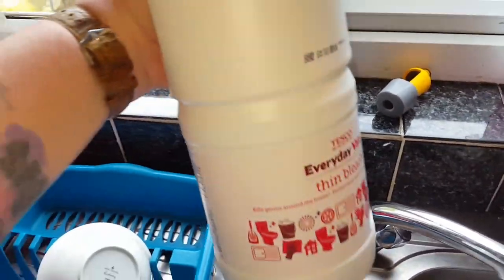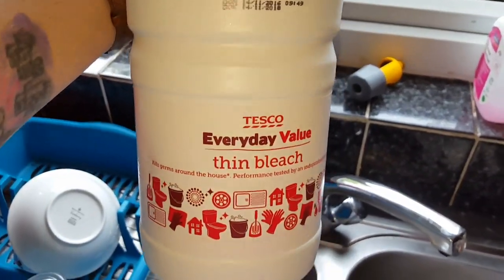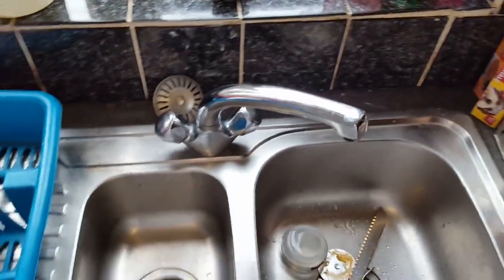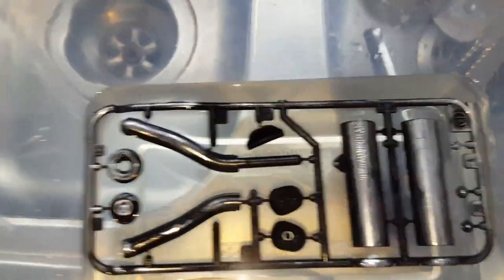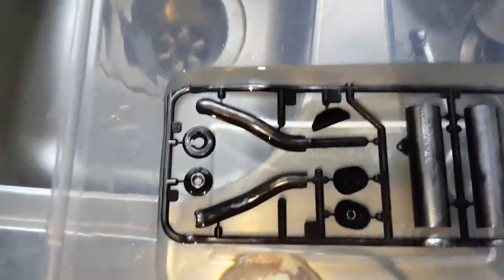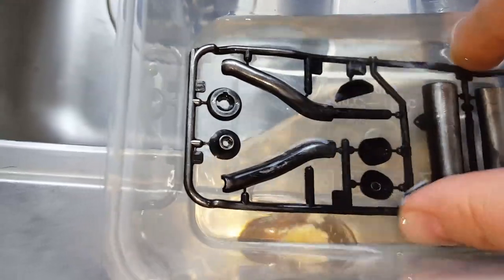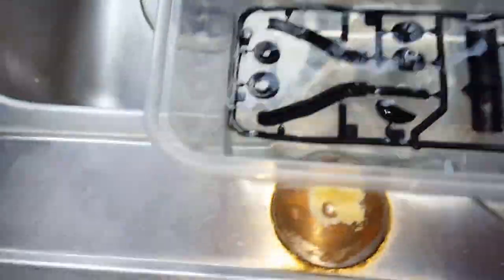It's just Tesco's Everyday Value Thin Bleach, pennies, 20 or 30p maybe at the most. And we can already see that the chrome has virtually left in that two or three minutes. Turn it over.